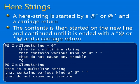Sub-expressions are both fine in here-strings. Here-strings include both single quotes and double quotes. A here-string starts with the double or single quote and a carriage return. The content is then started on the new line and continues until it is ended with the double at or single at, followed by a carriage return, as you can see in the example.